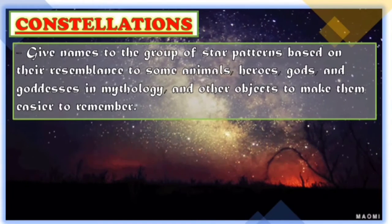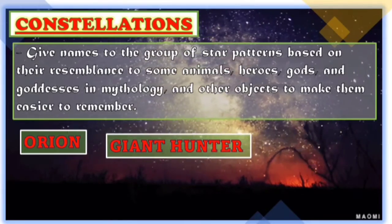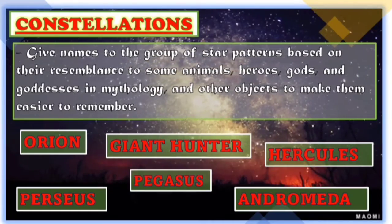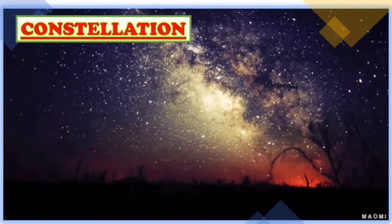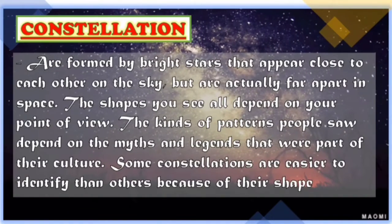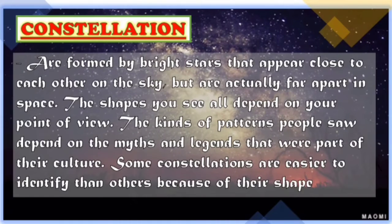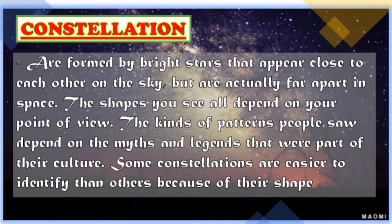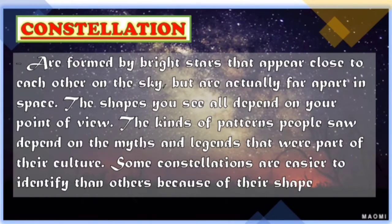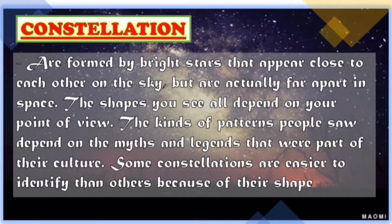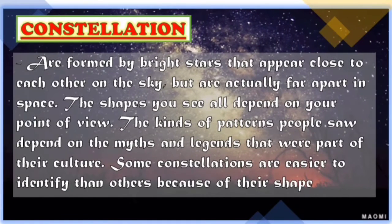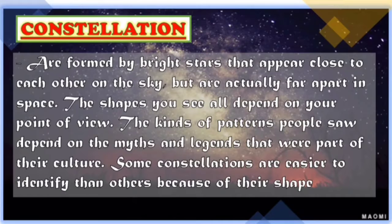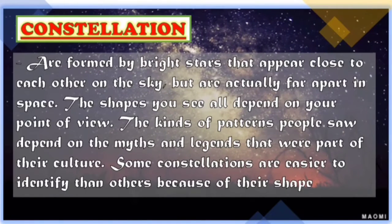Some of the constellations connected to Greek mythology are Orion, the giant Hunter; Hercules; Perseus; Pegasus; and Andromeda. As you can see in the night sky, constellations are formed by bright stars that appear close to each other on the sky, but are actually far apart from each other. The shapes you see all depend on your point of view. The kinds of patterns people saw depend on the myths and legends that were part of their culture. Some constellations are easier to identify than others because of their distinct shape.